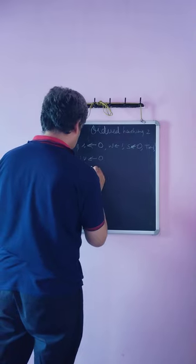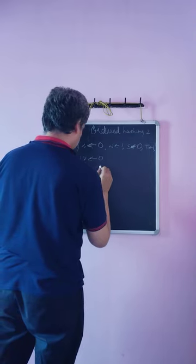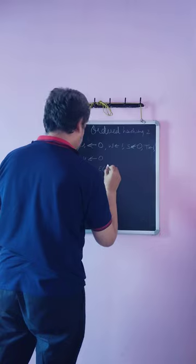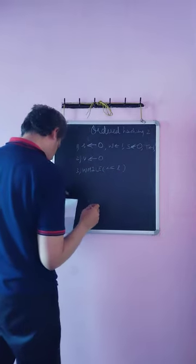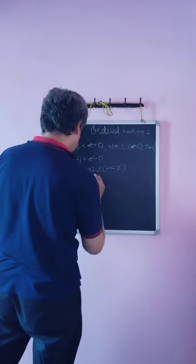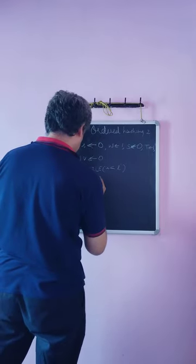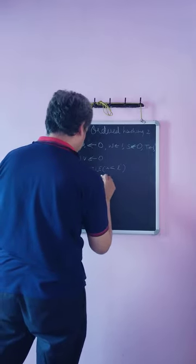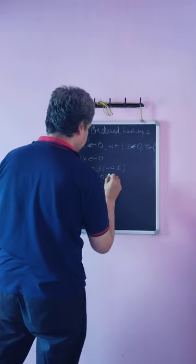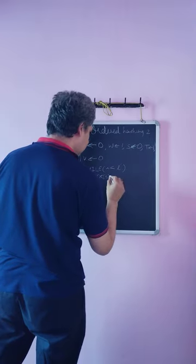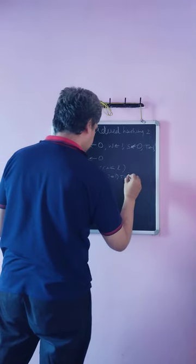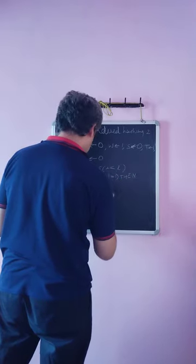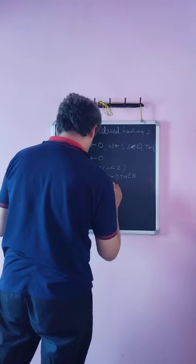Then we have I to 0, while I is less than L dash. If K of I, I is a bit of K, K is the key, V to 1, then V to V plus W.